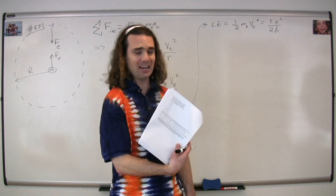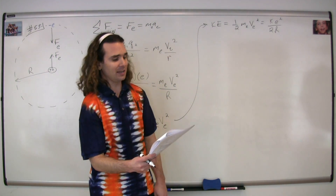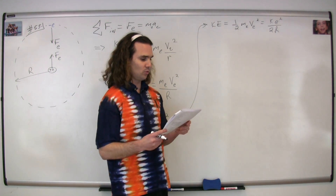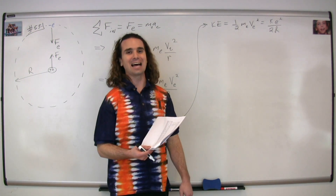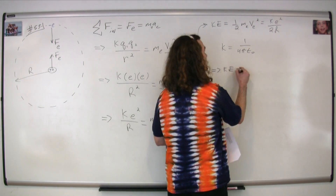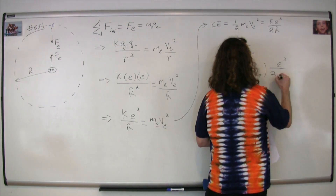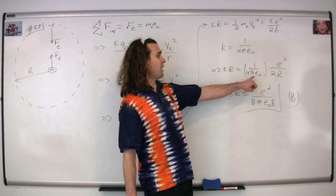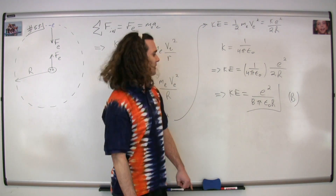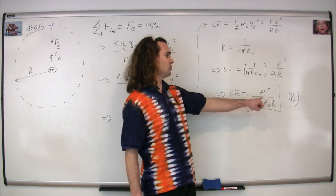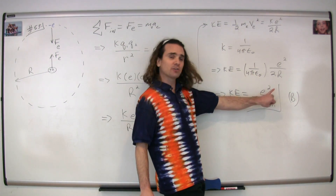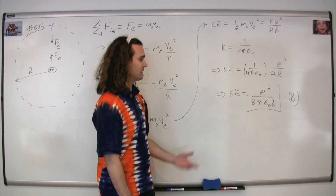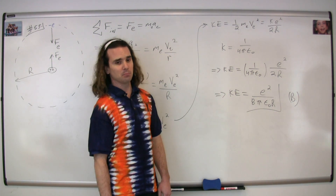That doesn't match any of our answers directly, so we need to remember that Coulomb's constant is equal to 1 over 4πε₀. Substituting in for the Coulomb constant, 1 over 4πε₀, we get that the kinetic energy is equal to the fundamental charge squared, divided by the quantity 8πε₀ times the radius. The correct answer is B.